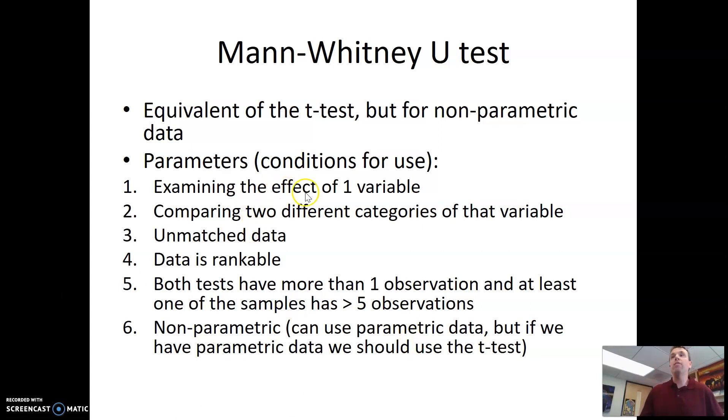So when can we use this? You have to be only looking at one variable, just like the t-test, so only one variable that you're changing, and it's when you have two different categories of that variable. It has to be unmatched data, and the data has to be rankable. Both tests have to have more than one observation, and at least one of the samples has to have greater than five observations. So in other words, you have to have replicates, and at least one of the samples has to have at least more than five replicates.